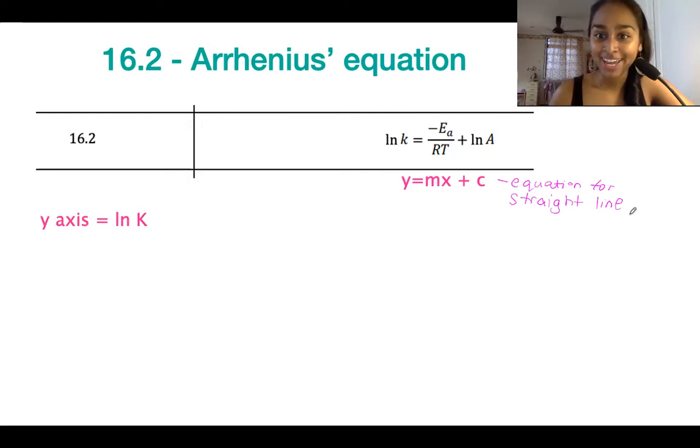So if you were to try and graph out this modified Arrhenius' equation according to the rules of y equals mx plus c, on your y axis you would have ln k, so the natural log of your rate constant. If we have a look at this value over here, so this is going to be your mx. So m is going to be the gradient and that's going to be negative Ea over R.